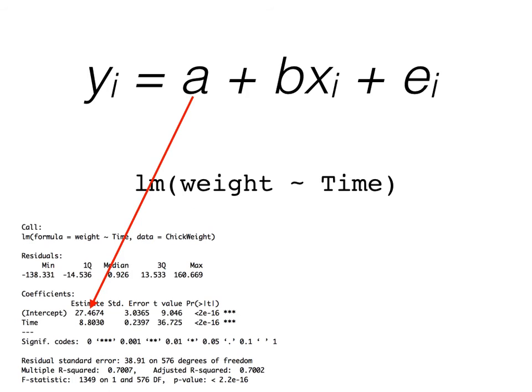We can also see b, or our slope, by looking at the estimate for time, since time is our independent variable. We see here that for each day that passes, a chick gains roughly 9 grams.